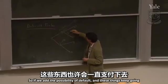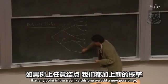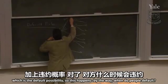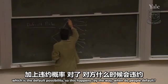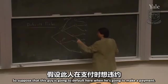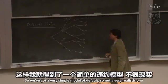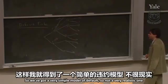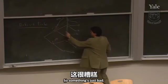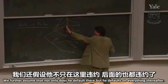If we add the possibility of default, and there are payoffs at the end or along the way, at any point in the tree we add a new possibility: the default possibility. When do people default? They never default before they have to make a payment — they default exactly when they're supposed to make a payment. So suppose this guy defaults when he's going to make a payment. At every possible scenario he defaults there, so we've got a very simple model of default. Once he's gotten to that node you know he's not going to make the payment the next period, and let's assume not only does he default there, but he defaults on everything thereafter.